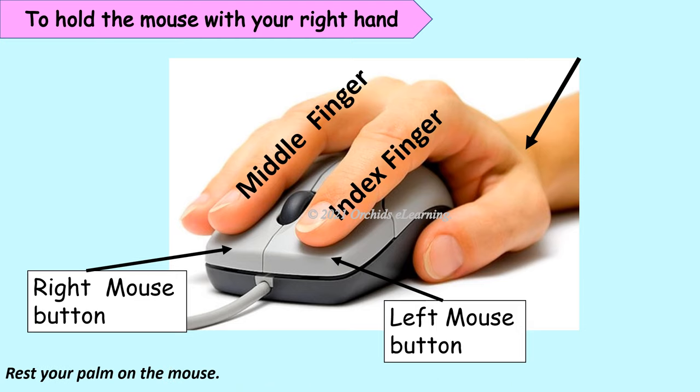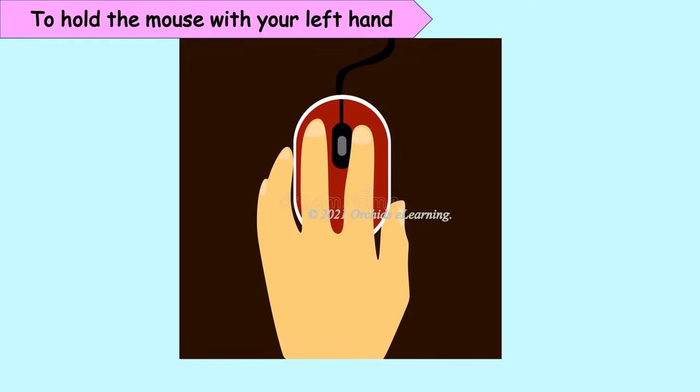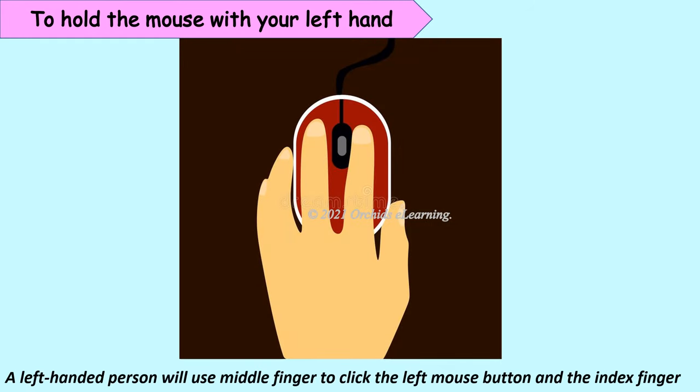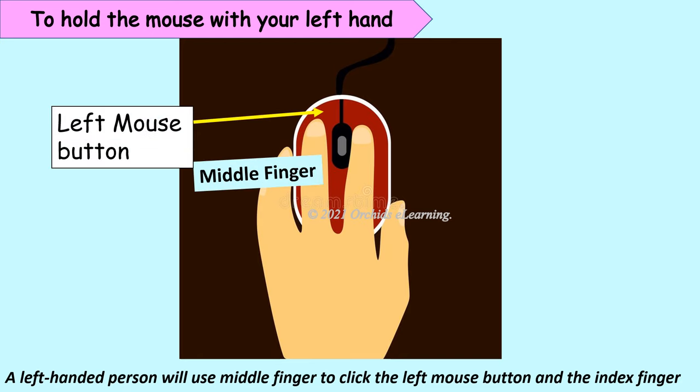To hold the mouse with your left hand: A left-handed person will use their middle finger to click the left mouse button and the index finger to click the right mouse button.